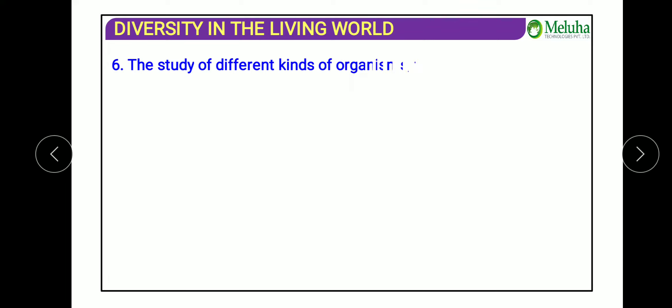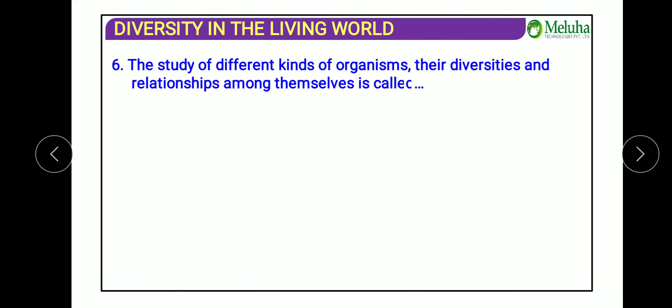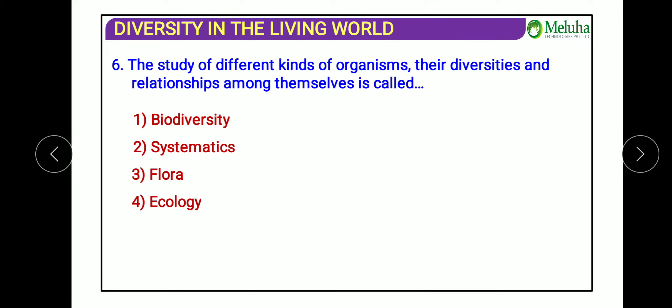The next question: the study of different kinds of organisms, their diversities, and their relationships among themselves is called what? The answer is systematics. Systematics is essentially like taxonomy — we study different kinds of organisms, their diversity, and relationships, arranging them based on their characters in a systematic way. It is another term used to define taxonomy.